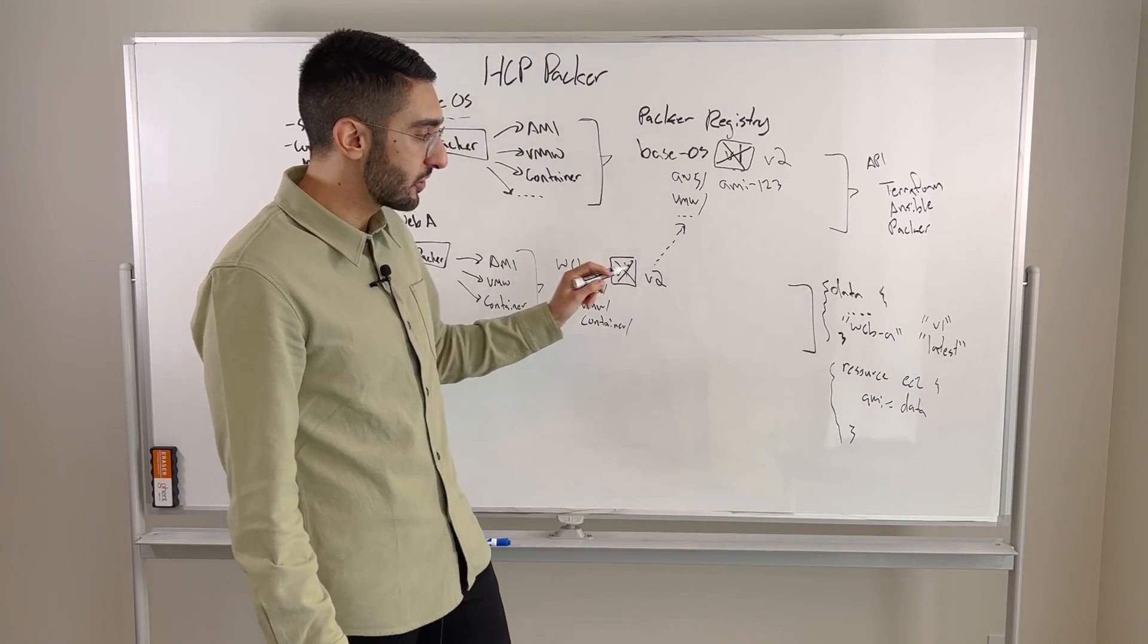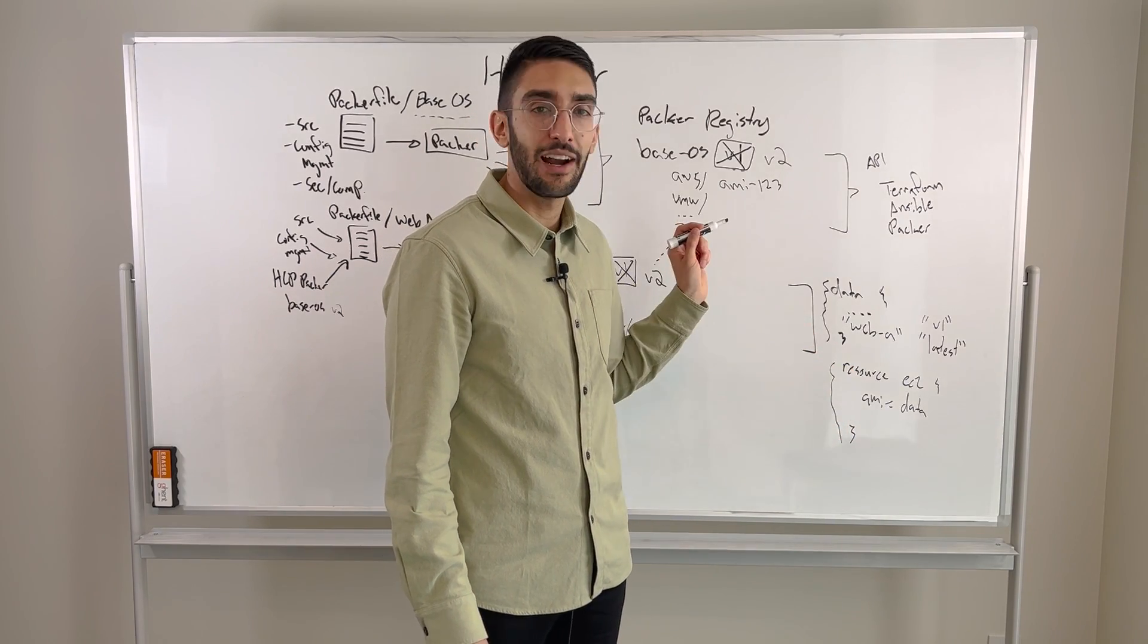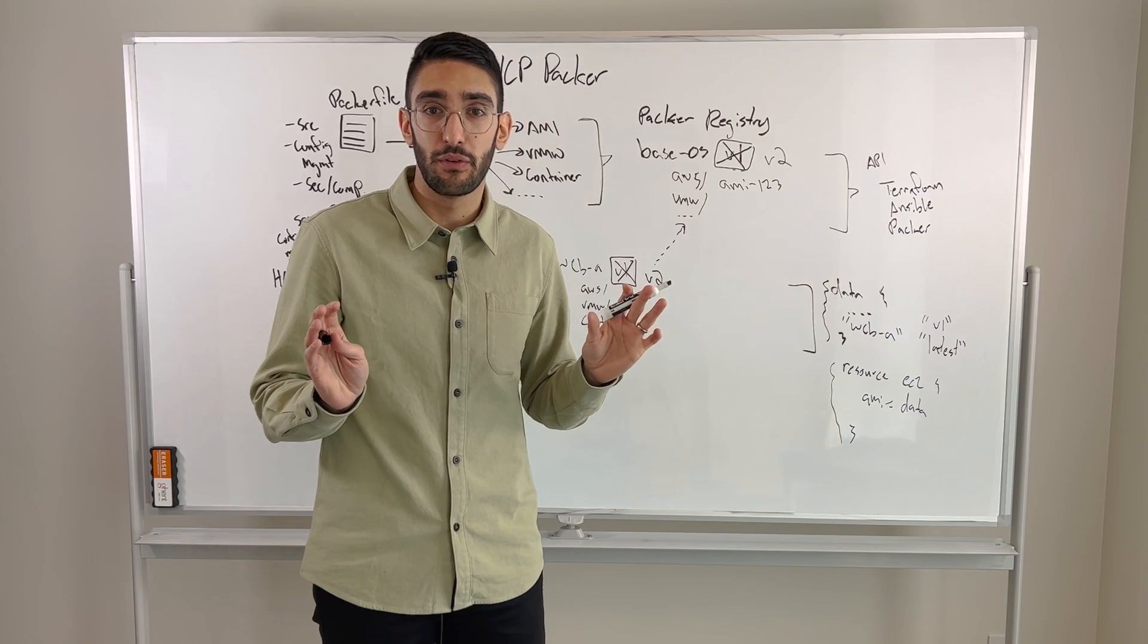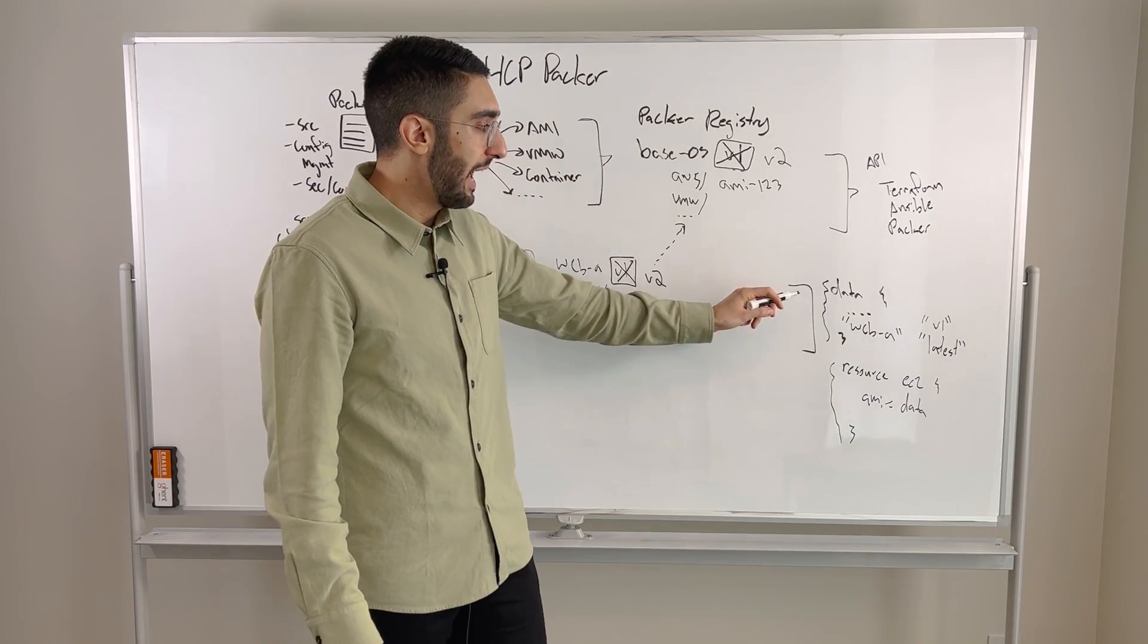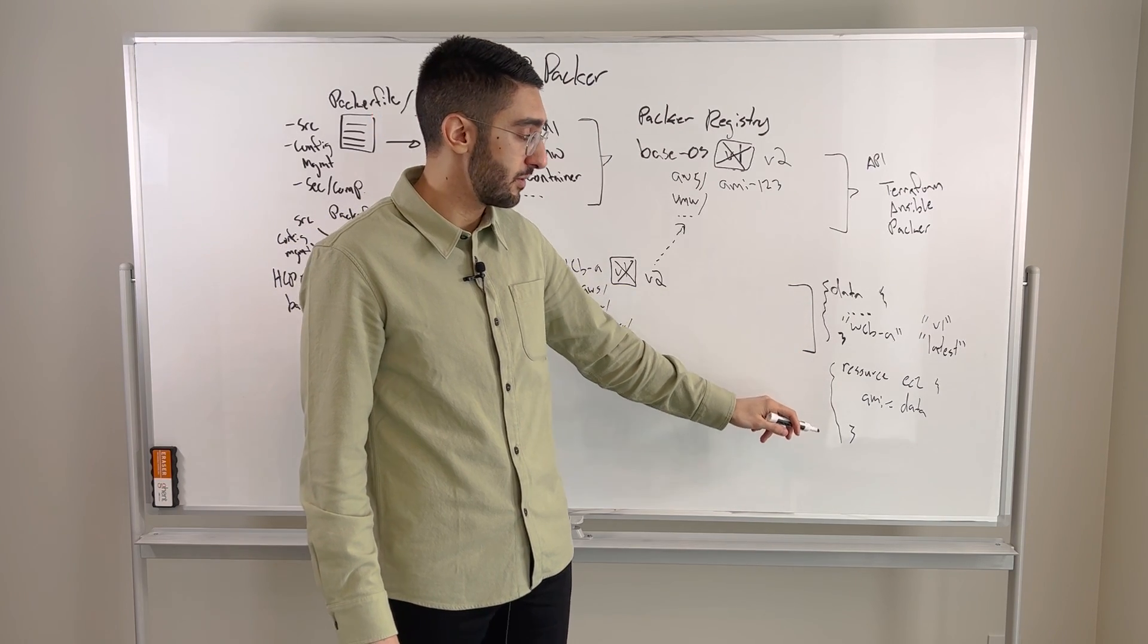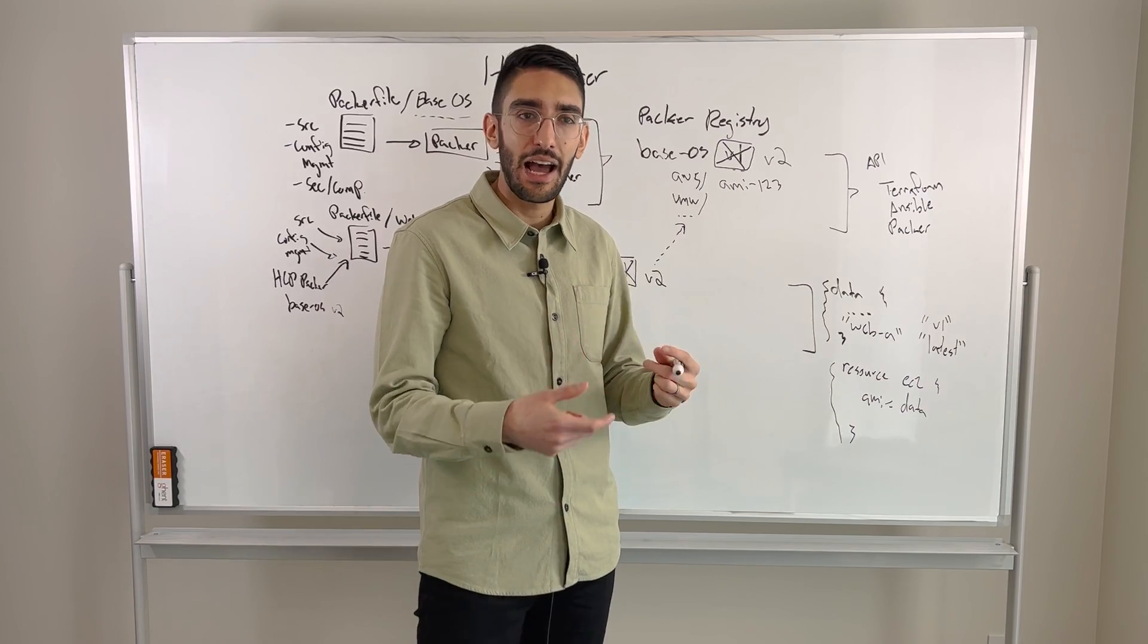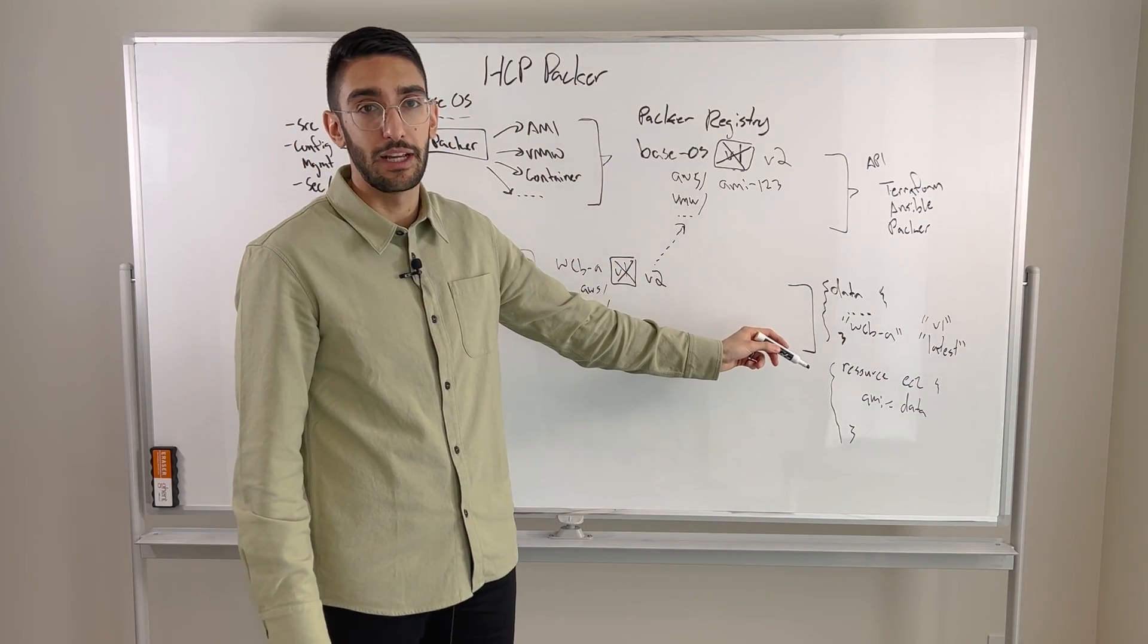And so now if a user tried to apply this Terraform configuration, they're actually going to get an error message back that says, you're trying to deploy version 1, that one has been revoked, there's a security vulnerability that's known. And they might not even be deploying that new infrastructure. It might be that in the course of they're managing some other set of resources, they do a Terraform run, and now that picks up the fact that you have this image that's been revoked, and that thing is running in production.